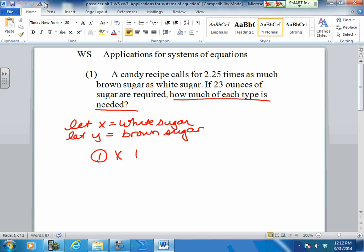Anybody come up with one equation from this? 23 ounces are required of both of your sugars. So Anita came up and said, well, if I add the brown and the white I get 23 ounces. One equation. 23 ounces of all sugars. So a second equation.